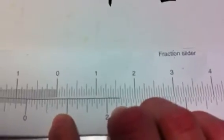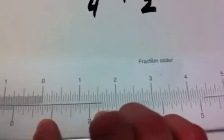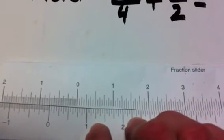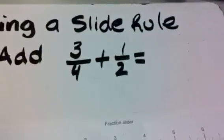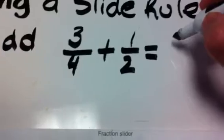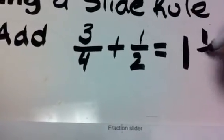and on my fraction slider, I can see where 1 half would be, which makes my answer 1 and 1 fourth. I'm going to write that down. 3 fourths plus 1 half is 1 and 1 fourth.